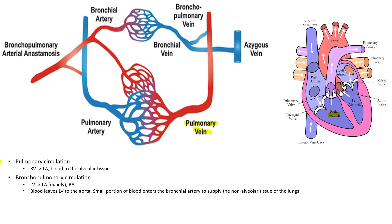Bronchopulmonary circulation is a little different. This is how blood moves from the left ventricle to the left atrium, mostly. However, there's going to be some blood which moves into the right atrium from the left ventricle. Inside the left ventricle, we are pushing oxygenated blood away from the lungs and into our systemic tissues during systole.